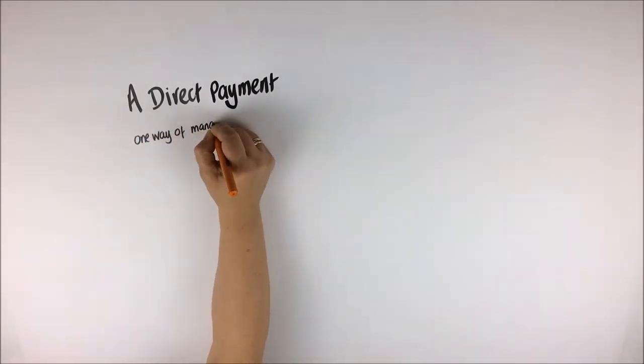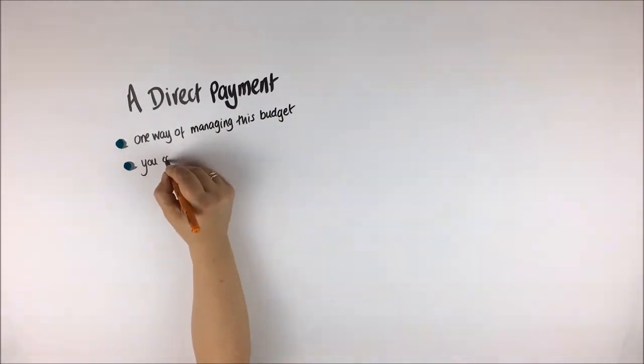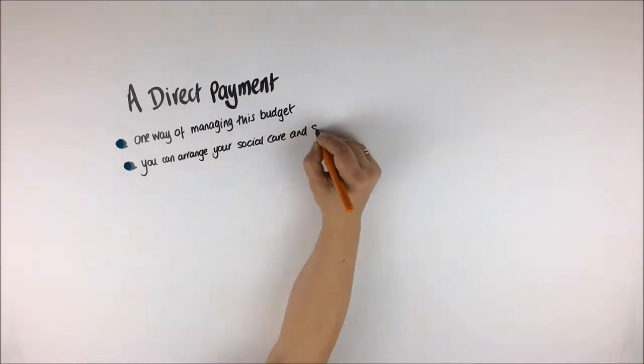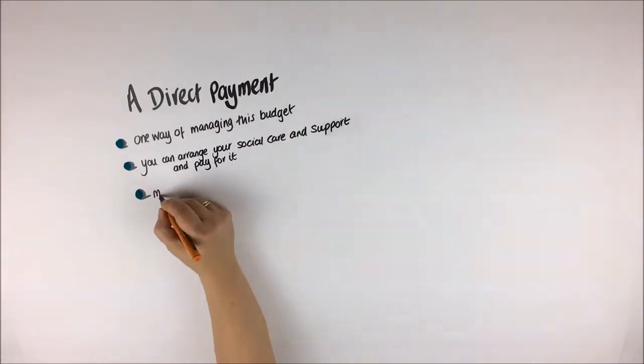A direct payment is one way of managing this budget. It is money given to you based on the amount agreed in your personal budget so that you can arrange for social care and support and pay for it, instead of the local authority arranging it for you.